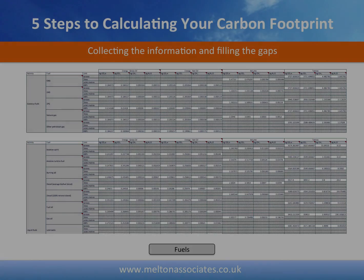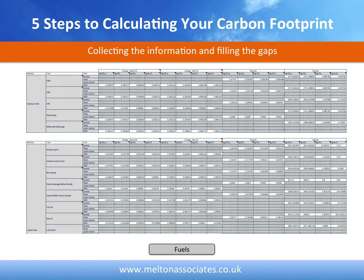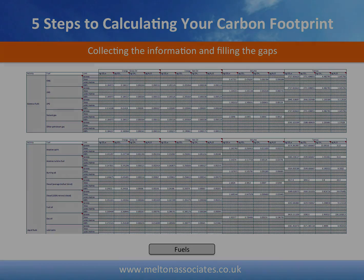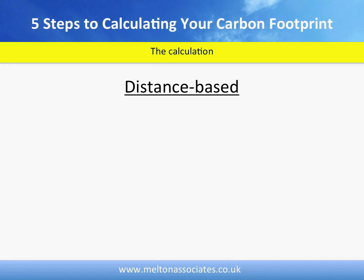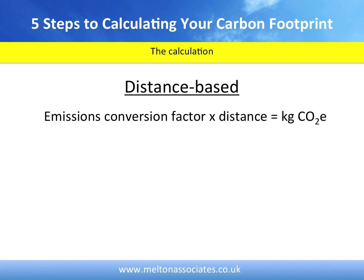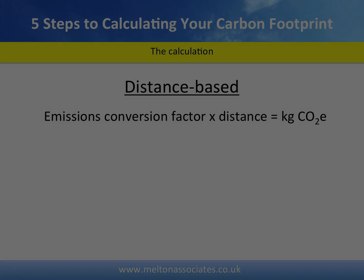Let's now click on the Fuels worksheet. You would use this when you have information on the fuel consumption of the vehicles used. We're showing only a section of it here. There are tables for various fuel types. The calculation is as follows: the emission conversion factor, which you get from the DEC-DEFRA tables discussed in Step 3, is multiplied by the total known or estimated shortest feasible distance the truck must have travelled from where it picked up the freight to the point of delivery.